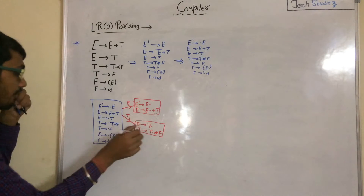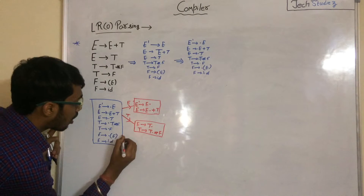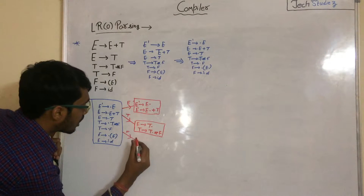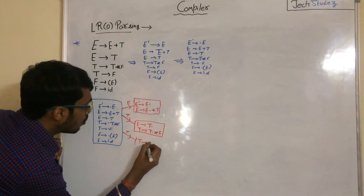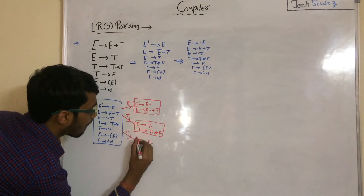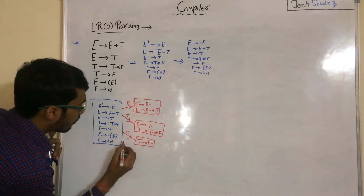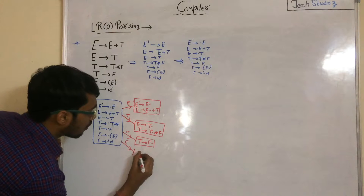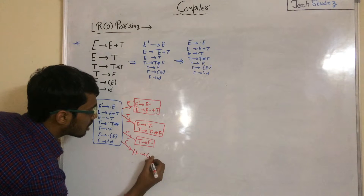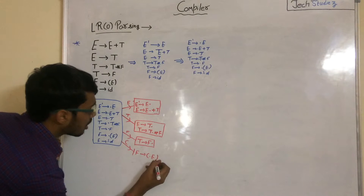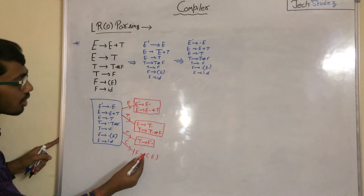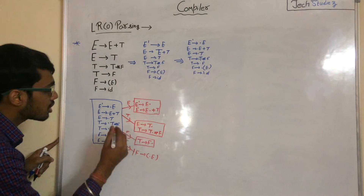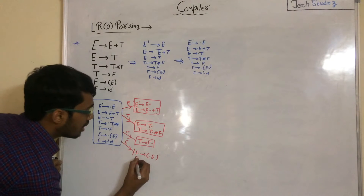Apply GOTO with F — we get T to F·. Apply GOTO with opening parenthesis — we get F to (·E). After the dot we get E, so we add all productions from E: E to ·E plus T and E to ·T.